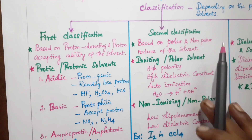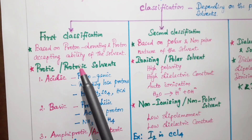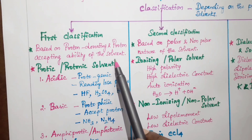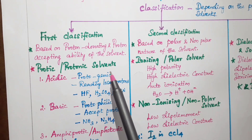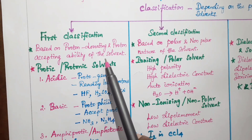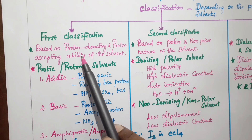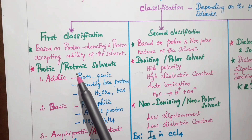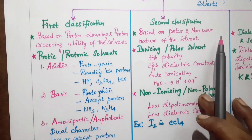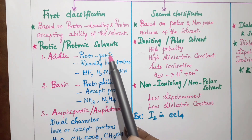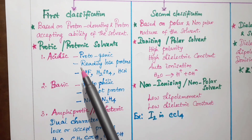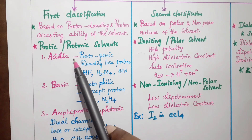The first classification is based on the proton-donating and proton-accepting ability of the solvent. Under this classification, solvents are divided into protic (or protonic) solvents and non-protic (non-protonic) solvents. First, let us look at what protic means.